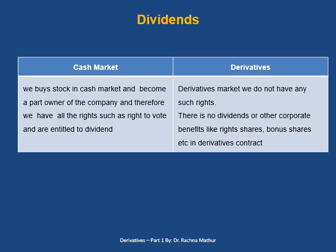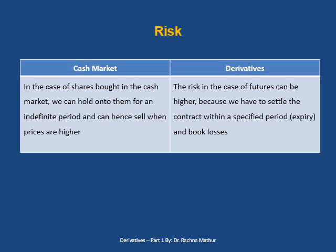On dividend: in the cash market, when we buy a stock we are entitled to receive dividends as part owners of the company. But in the derivative market, there is no dividend or any corporate benefits. On risk: in the cash market, shares can be held for an indefinite period and sold when prices are higher. But in the derivative market, such as in futures, we have to settle the contract within the specified period — at expiry — and book losses if necessary.